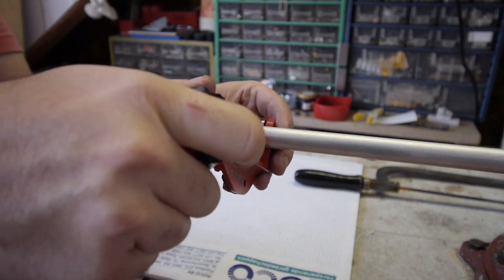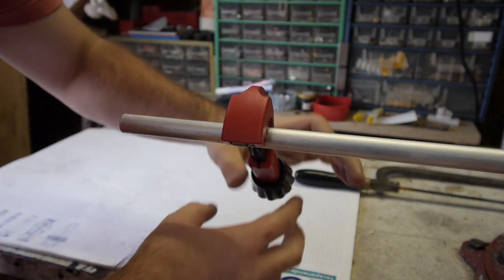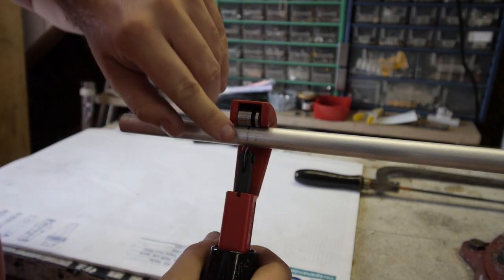And then you just twist it around it while turning the knob a little bit, so the knife will make a groove here